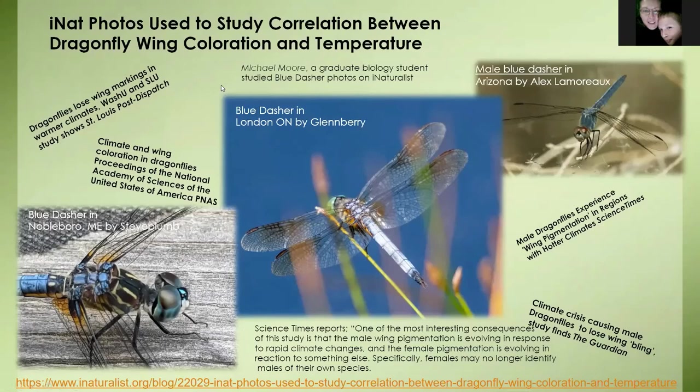This is a report from Michael Moore, a graduate biology student, who used iNaturalist photos to study the color of dragonfly wings. The observation correlating coloration to climate change may affect breeding patterns, should the females not recognize another dragonfly of her species due to dramatic differences in wing markings.